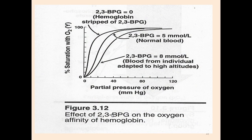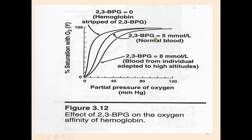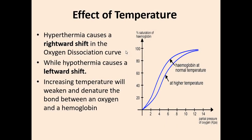In the graph, increasing the concentration of 2,3-BPG from 5 mmol/L to 8 mmol/L shifts the oxygen dissociation curve to the right. Regarding the effect of temperature: hyperthermia causes a rightward shift in the oxygen dissociation curve while hypothermia causes a leftward shift. A rightward shift means decreased affinity of hemoglobin towards oxygen, and a leftward shift means increased affinity. Increasing temperature weakens and denatures the bond between oxygen and hemoglobin.